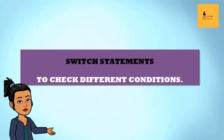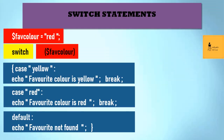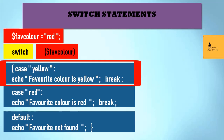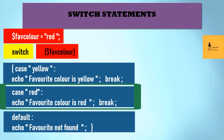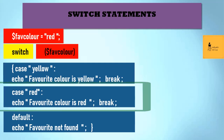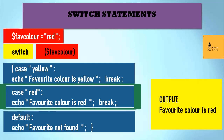If a user needs many different conditions to be checked, switch statements can be used. The switch statement uses a switch function variable which will be compared with every condition inside the switch function, and whichever condition matches the switch function variable will be executed.